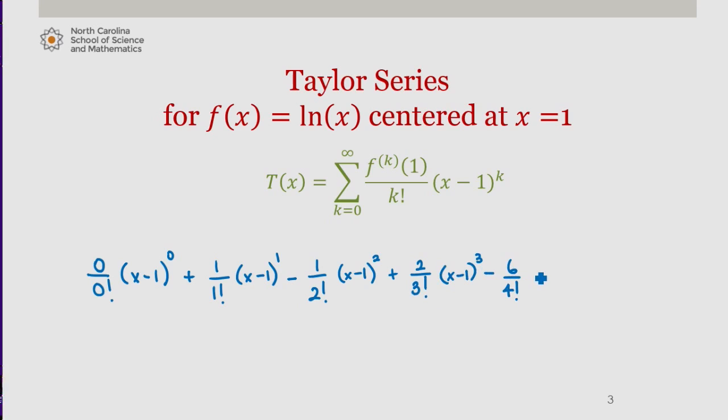plus 24 over 5 factorial times x minus 1 to the fifth, and so on. Of course, remembering that each of these coefficient numerators were generated in the slide before.